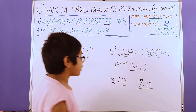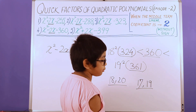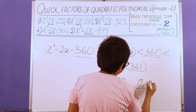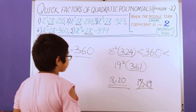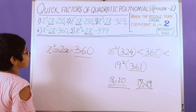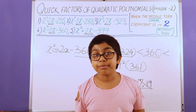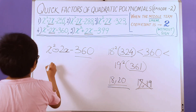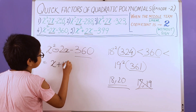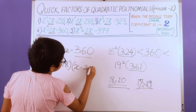We have an even number, so we take the product of even numbers and not the product of odd numbers. The odd pair goes out and the even pair goes in. We have a negative sign from 2x, which tells us the smaller number should have the positive sign and the bigger number should have the negative sign. So we factorize the polynomial and get (x + 18)(x − 20).